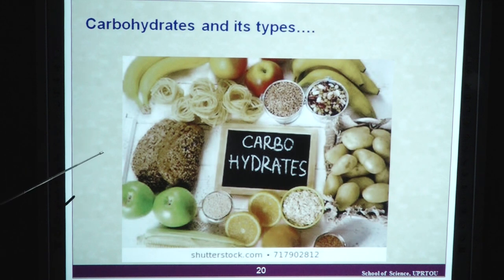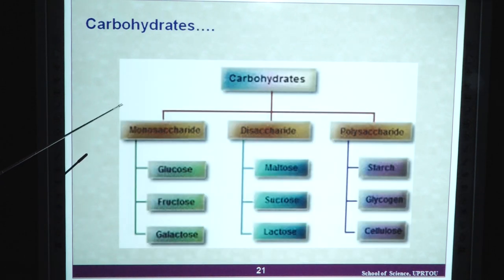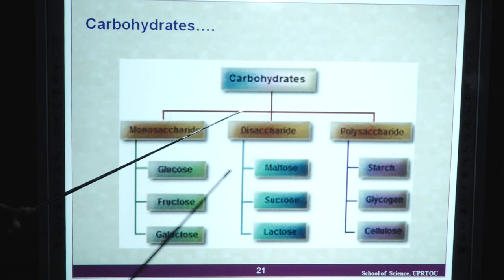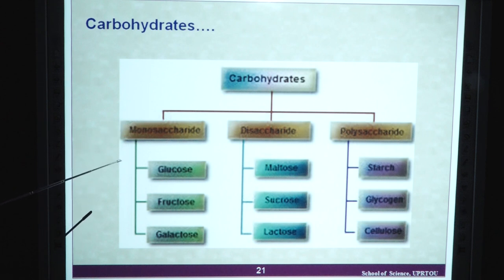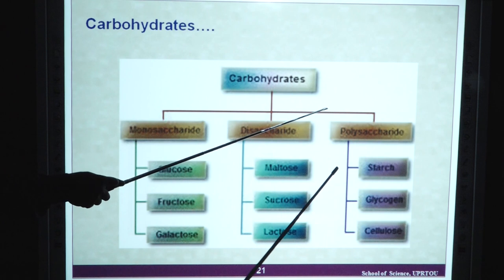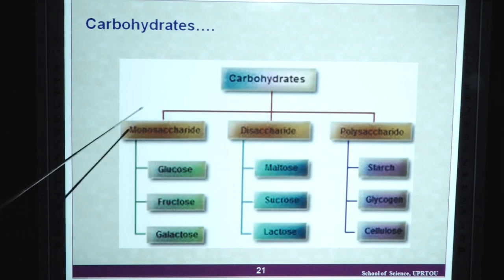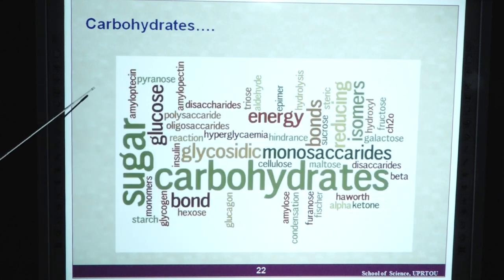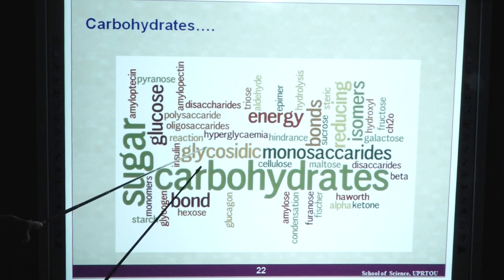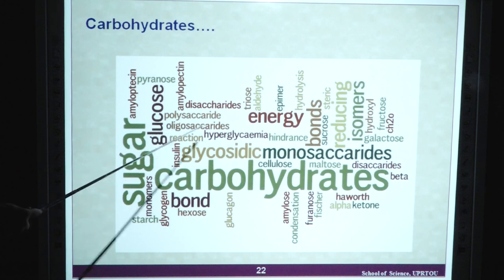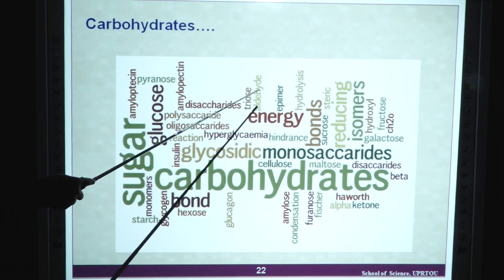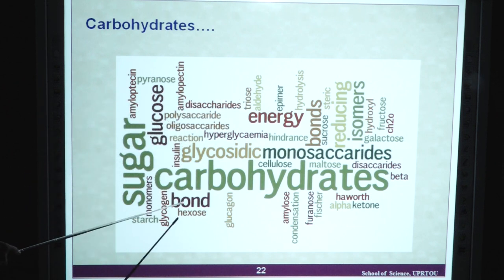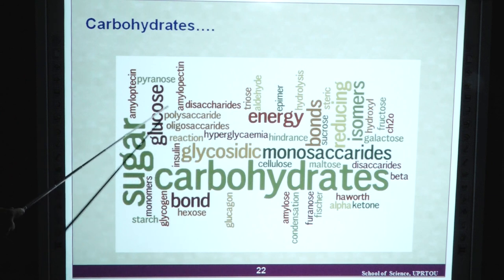Carbohydrates and their types: we have different sources of carbohydrates. Carbohydrates are of different types — monosaccharide, disaccharide and polysaccharide. In the case of monosaccharides, we have glucose, fructose and galactose. In the case of disaccharides — maltose, sucrose and lactose. In the case of polysaccharides — starch, glycogen and cellulose. Related terminology includes glycosidic bond, oligosaccharide, hyperglycemia, aldehyde, epimer, triose, amylopectin, starch and hexose.